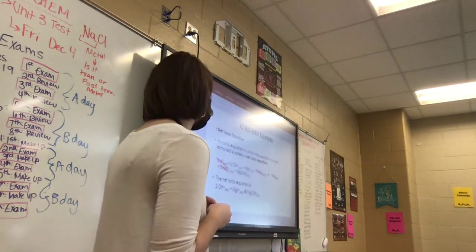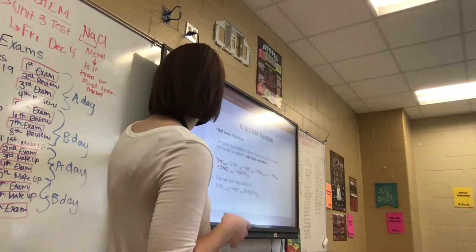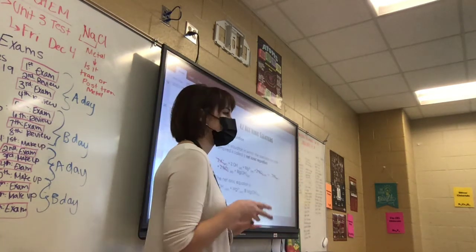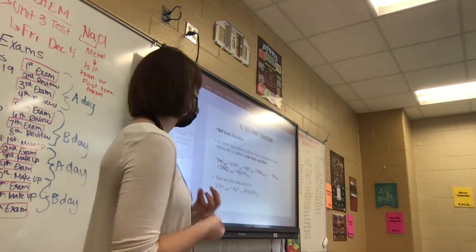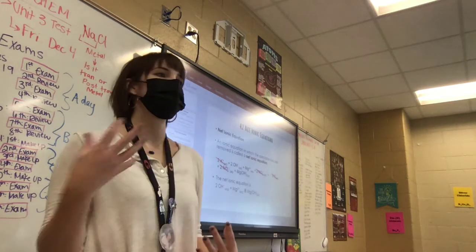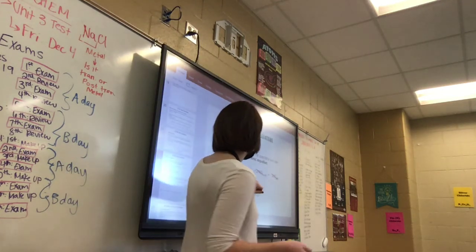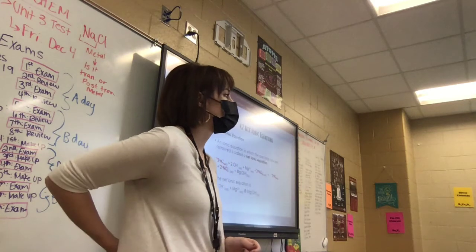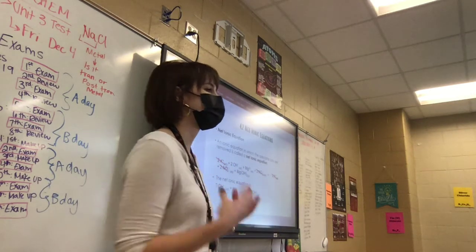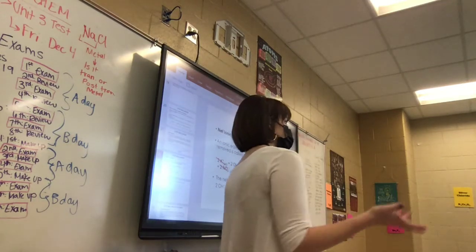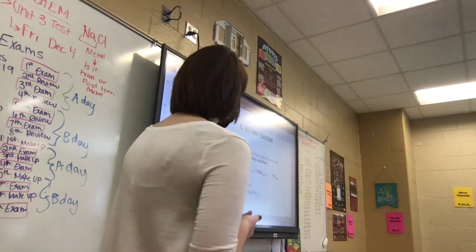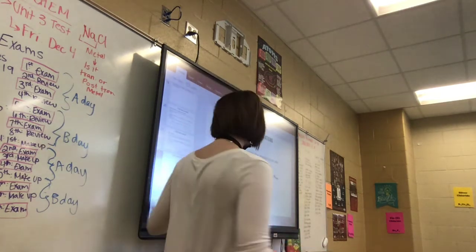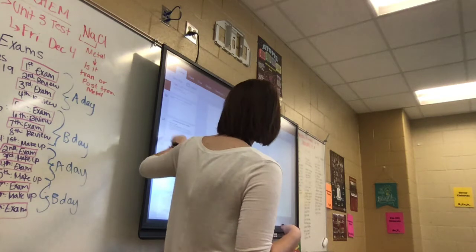The complete ionic equation shows all ions whether reacting or not. The net ionic equation shows only the ions that are reacting. Spectator ions appear at the beginning and at the end without reacting — for example, potassium and nitrate ions are present on both sides. To write the net ionic equation, we keep only the ions that come together to form a solid, liquid, or gas.